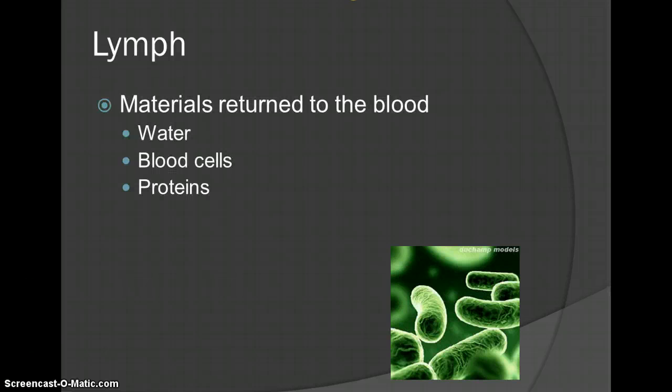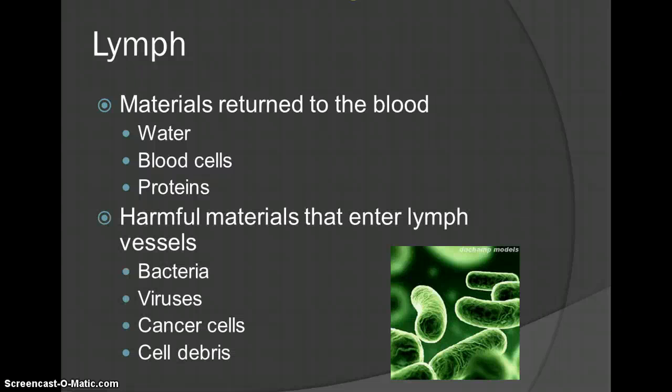What is lymph? It's all the materials returned to the blood — water, all the stuff that kind of gets out, old blood cells, proteins, all kinds of different things. It can also contain harmful materials: bacteria, viruses, cancer cells, cell debris — all this other stuff that gets outside the bloodstream. It goes back up into your heart so that hopefully your body can take care of it.